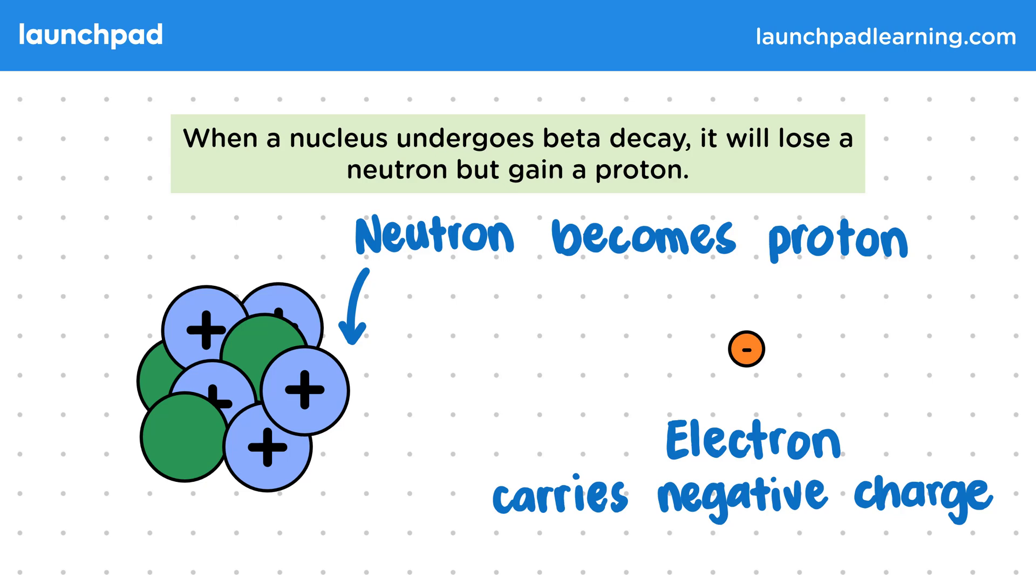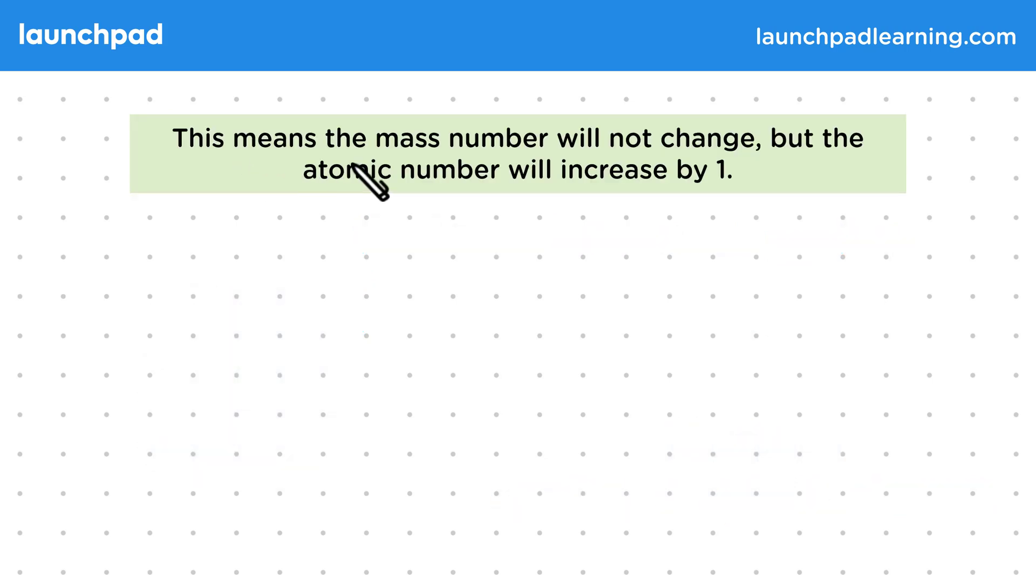So how exactly does this change the nucleus? Well, this means the mass number will not change, but the atomic number will increase by one.